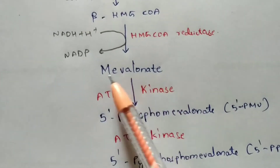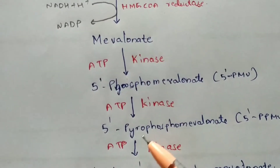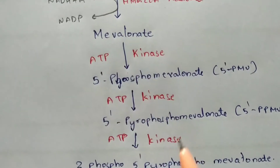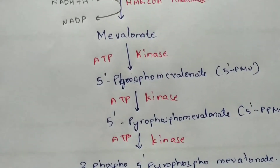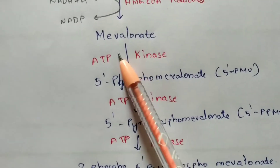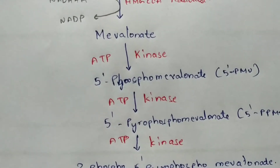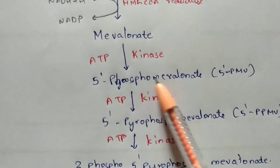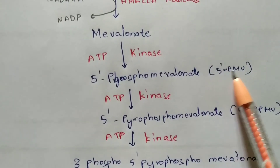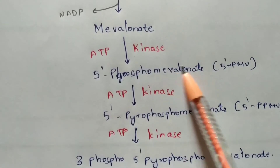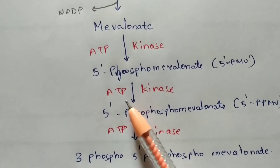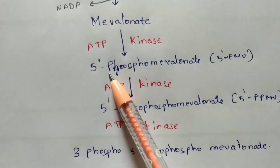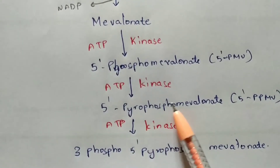Mevalonate undergoes three kinds of reactions. In each reaction, ATP is utilized and kinase is the enzyme. In the first reaction, 5'-phospho mevalonate (5'-PMV) is formed. In the second reaction, ATP and kinase are again utilized, and from 5'-PMV the formation of 5'-pyrophospho mevalonate (5'-PPMV) takes place.